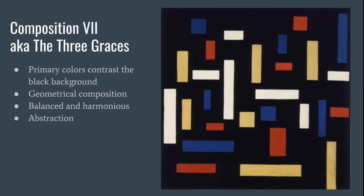His first piece we're going to talk about is called Composition 7, also known as The Three Graces. It uses the three primary colors plus white for the rectangles and black for the background. Most, if not all, of his artworks use at least the three primary colors. The black background adds contrast and makes the colored rectangles pop. The geometrical composition is orderly arranged and rational — even though he uses just colored rectangles and squares, the way he places them makes the composition look balanced and equal, creating a harmonious abstract composition.